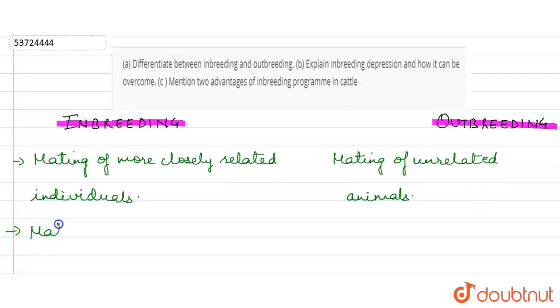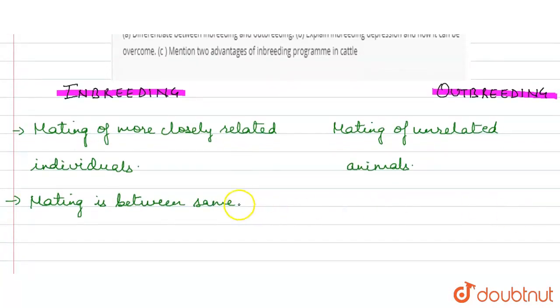Mating is between same species. Inbreeding me, whereas iske andar mating different species mein hoti hai.